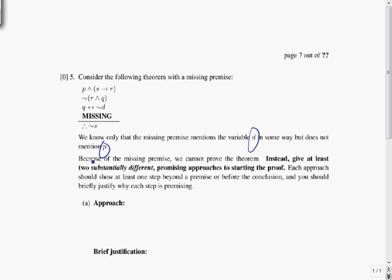Instead, give at least two substantially different promising approaches to starting the proof. Each approach should show at least one step beyond a premise, or before the conclusion, and you should briefly justify why each step is promising.